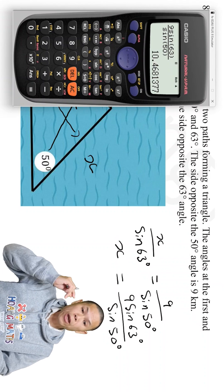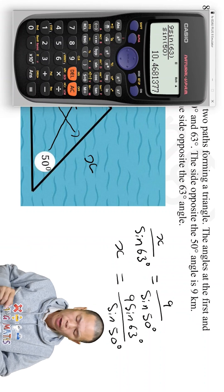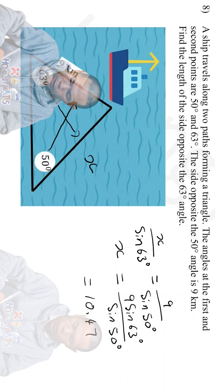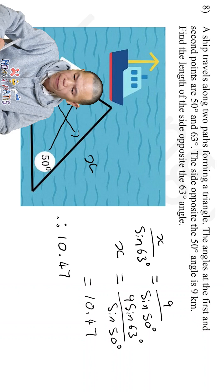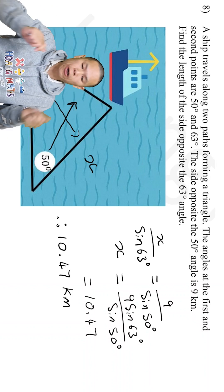There you go. 10.47, correct to two decimal places. So therefore, 10.47 kilometers.